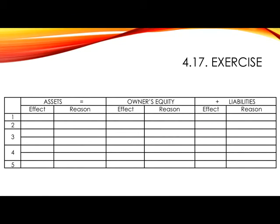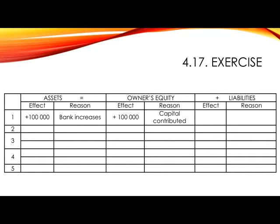Number 1. Owner deposits 100,000 Rand in the business's current account as his capital contribution. In this case, the two accounts affected are bank and capital. In assets, you will show plus 100,000 as bank increases, and in owner's equity, plus 100,000 for capital contributed.